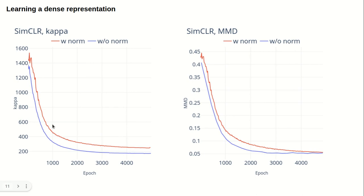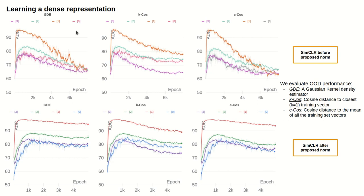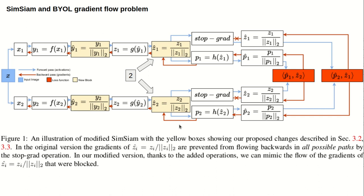We then evaluate the OOD performance using three different metrics. The first row is before normalization, the second row is after, and we can see that the second row has much better performance, and this is maintained all through training without any drastic effect.